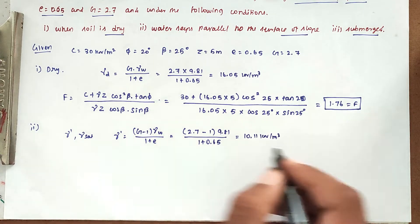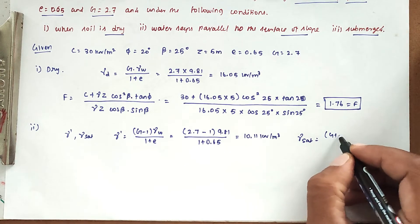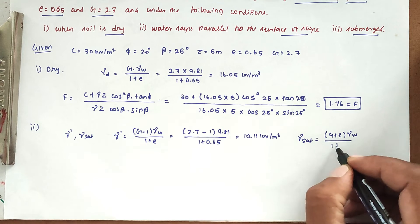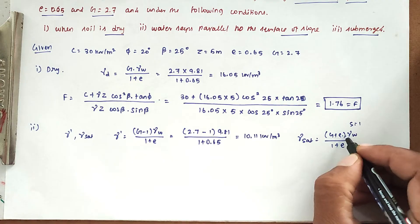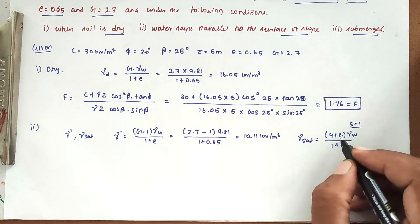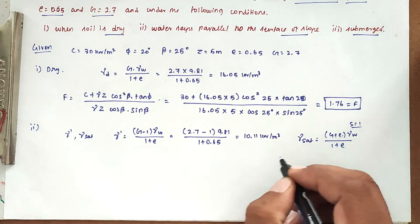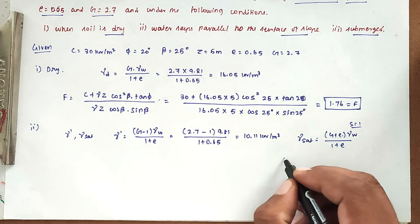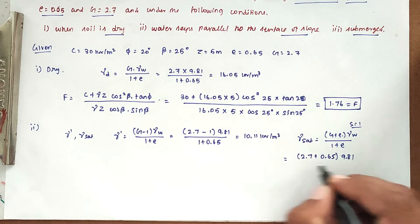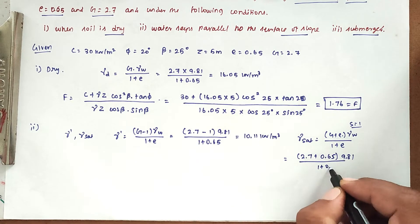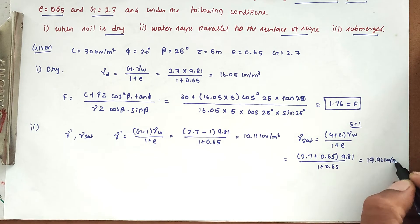Gamma saturation formula is: gamma_sat equals (G plus E) times gamma_W divided by (1 plus E), where S equals 1. Substituting values: (2.7 plus 0.65) times 9.81 divided by (1 plus 0.65). Solving this, gamma_sat equals 19.92 kilo Newton per meter cube.